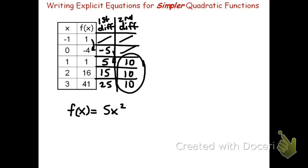Let's see if it works. If we substitute in negative 1, negative 1 squared is 1. Times 5 is 5. It doesn't quite work. Negative 1 should generate a 1. I need to correct it. I know that 5 minus 4 would give me 1.